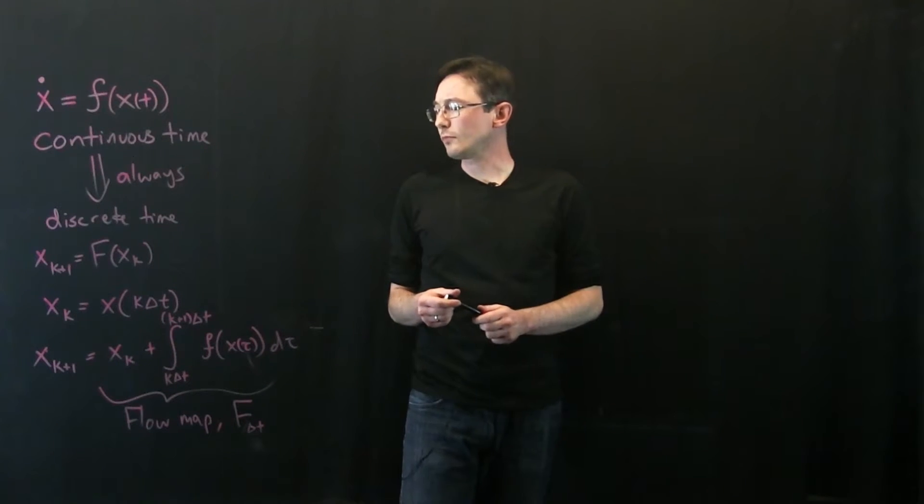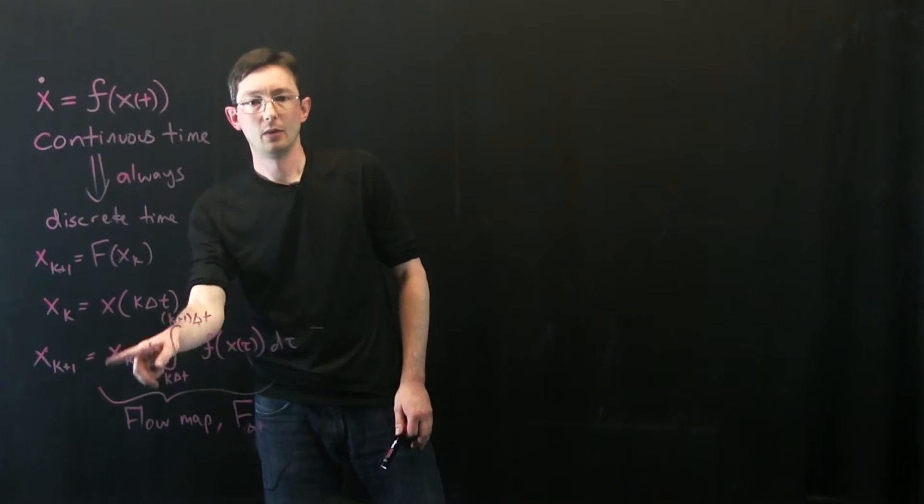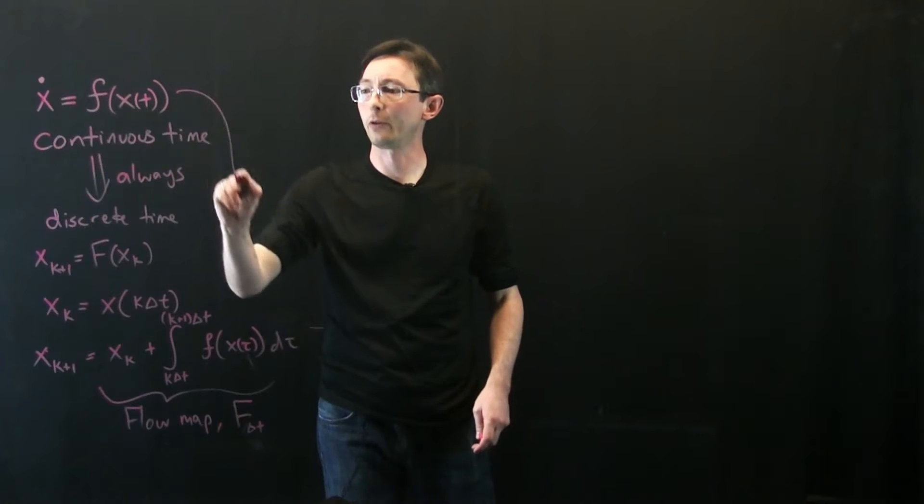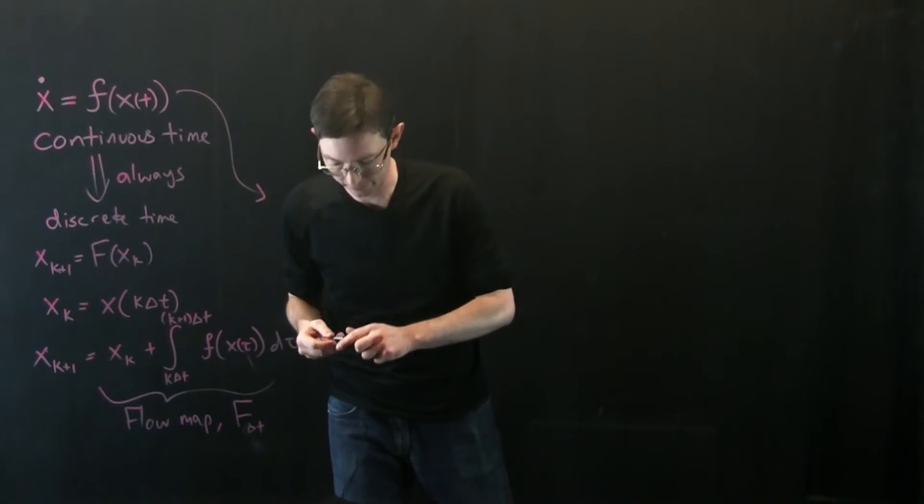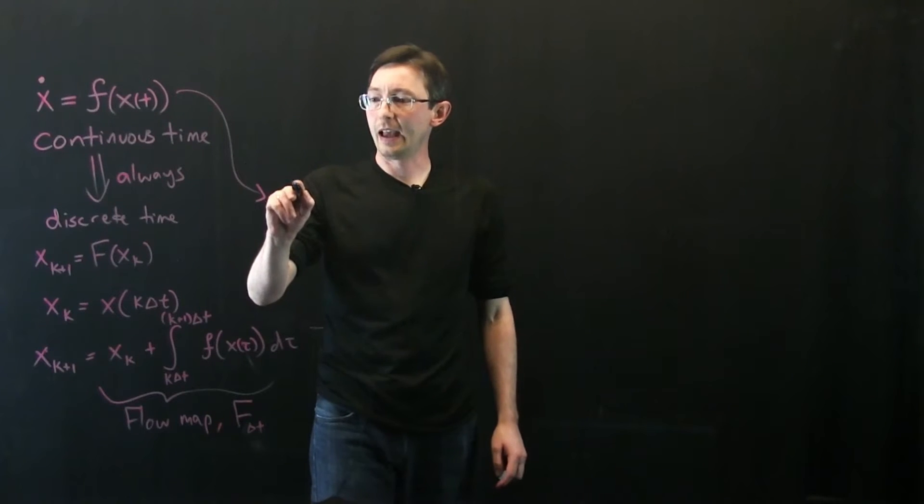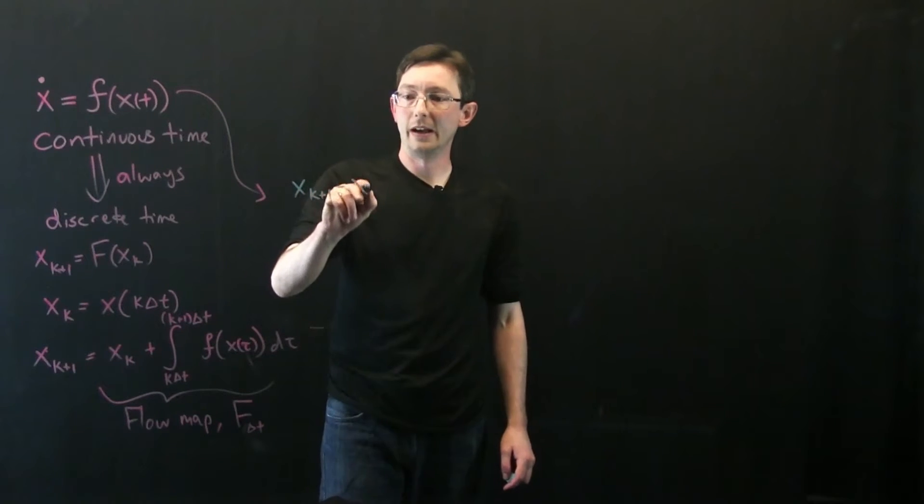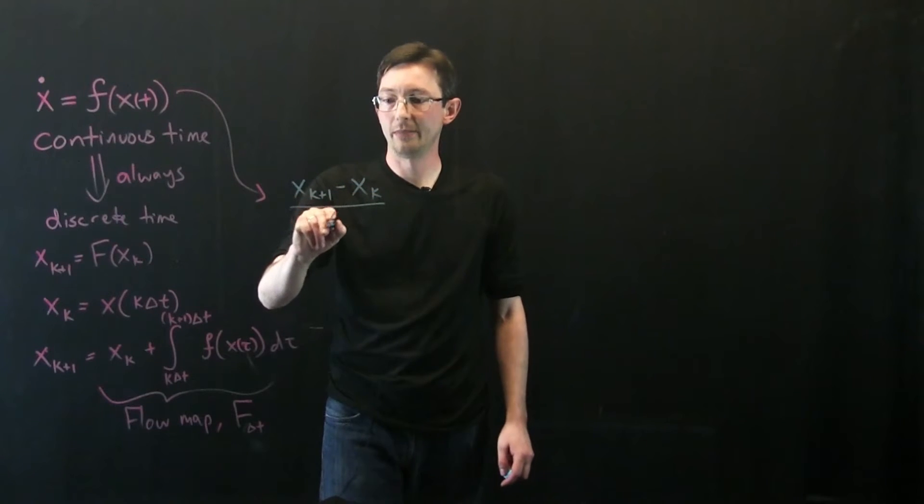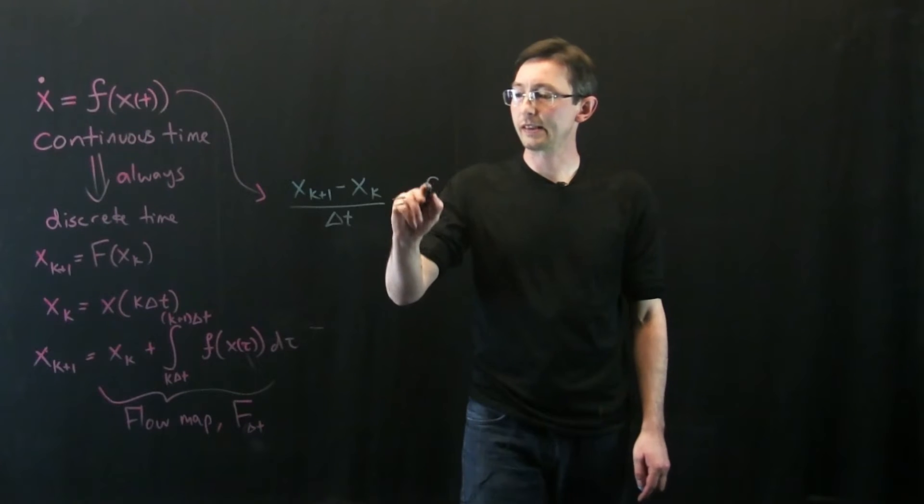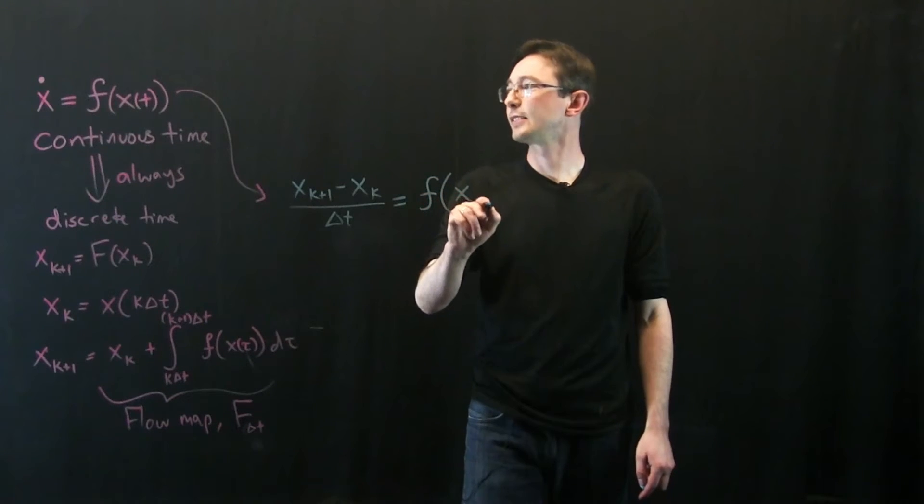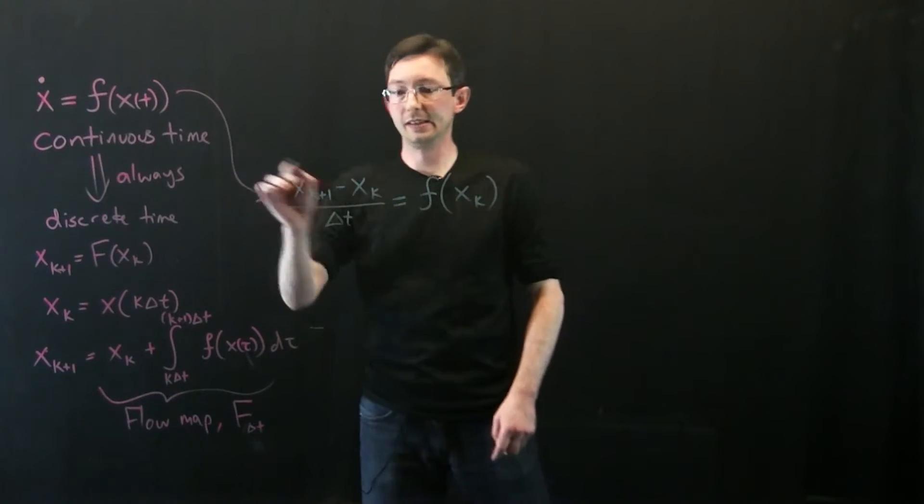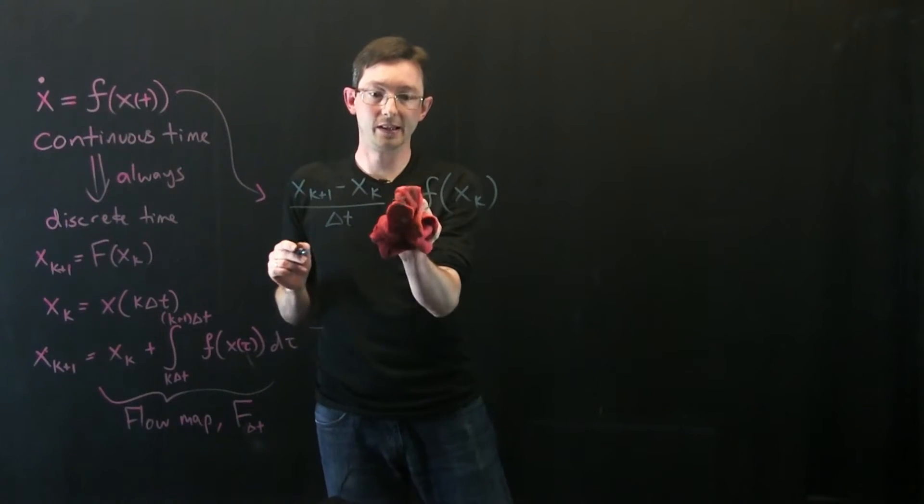One way that you can picture what this flow map is doing is we can try to just look at what a forward Euler integrator would look like. So instead of writing x dot let's say x at time k plus 1 minus x at time k divided by delta t equals f of x and let's say it's f of x at time k. I'm going to do a super simple approximation.